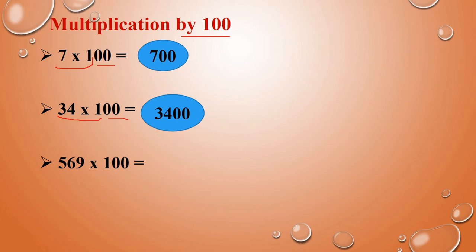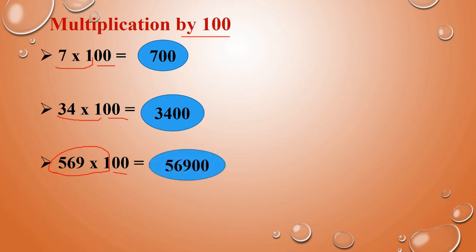Next: 569 into 100. Same way — the number alone you have to multiply first, then you have to include the zeros. So 569 into 1 is 569. There are 2 zeros — you have to add the 2 zeros. So the answer is 56,900.